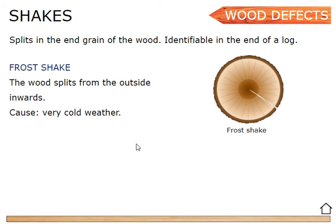You can think of it like an icicle. The wood splits from the outside inwards and will always go into the center of the wood — the pith. The cause is very cold weather, which is why it gets its name: the frost shake. It's just a straight line from the bark into the center of the tree.